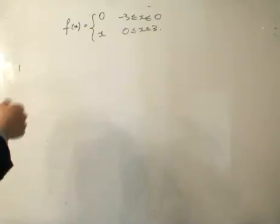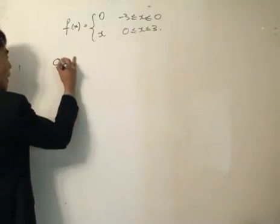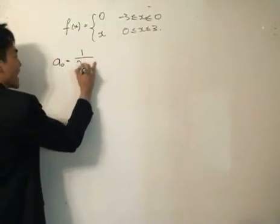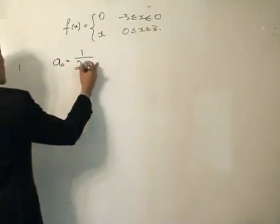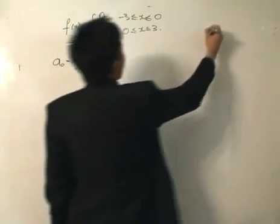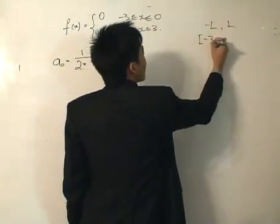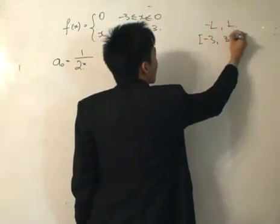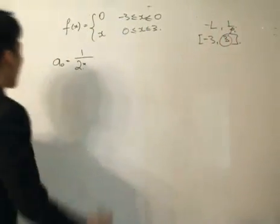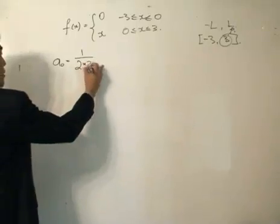It doesn't matter because we can still use our basic formula — a simple application. This is defined from minus L to L, which here is -3 to 3. Remember, L equals 3. So when I write the formula, it's 1 divided by 2L — make sure to put 3, not 6. 6 is 2L, but L is equal to 3.